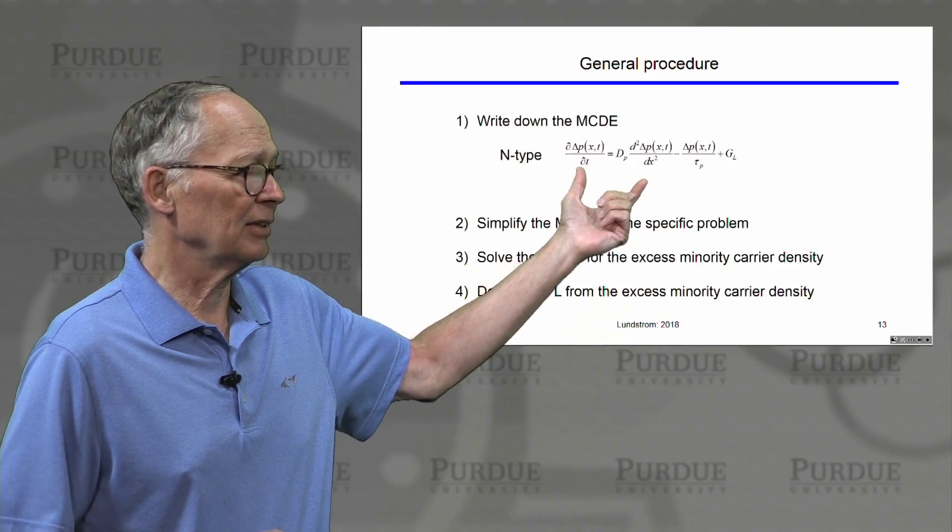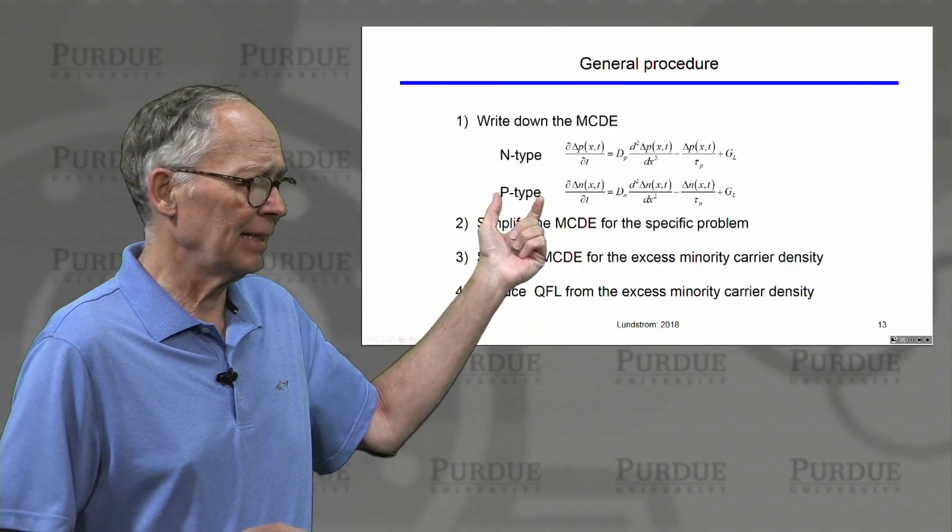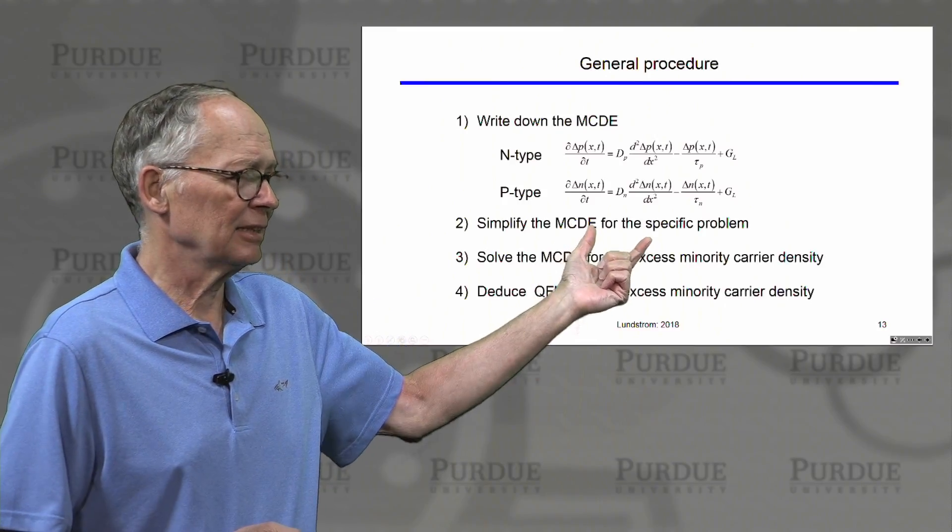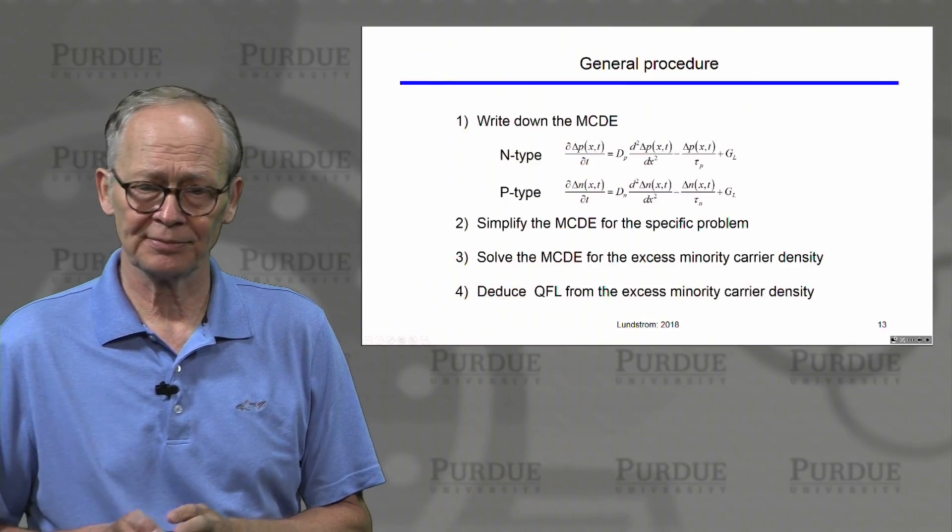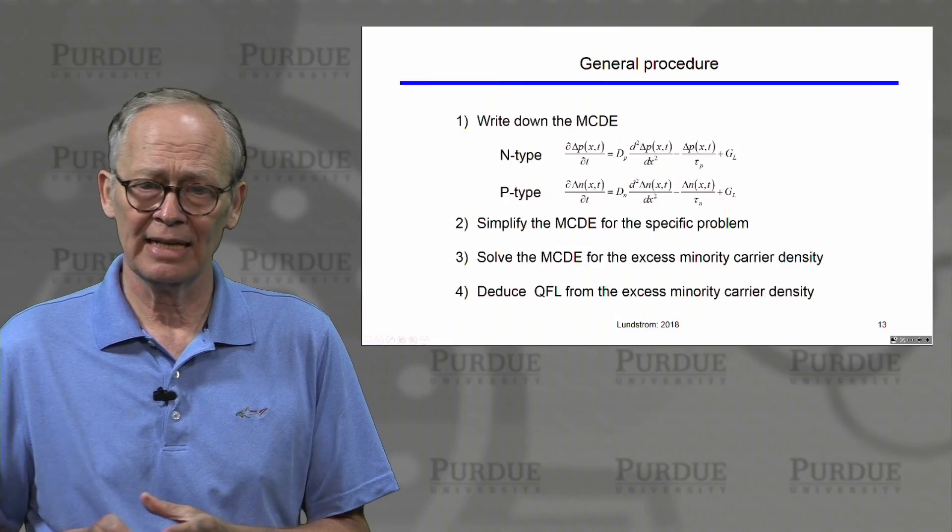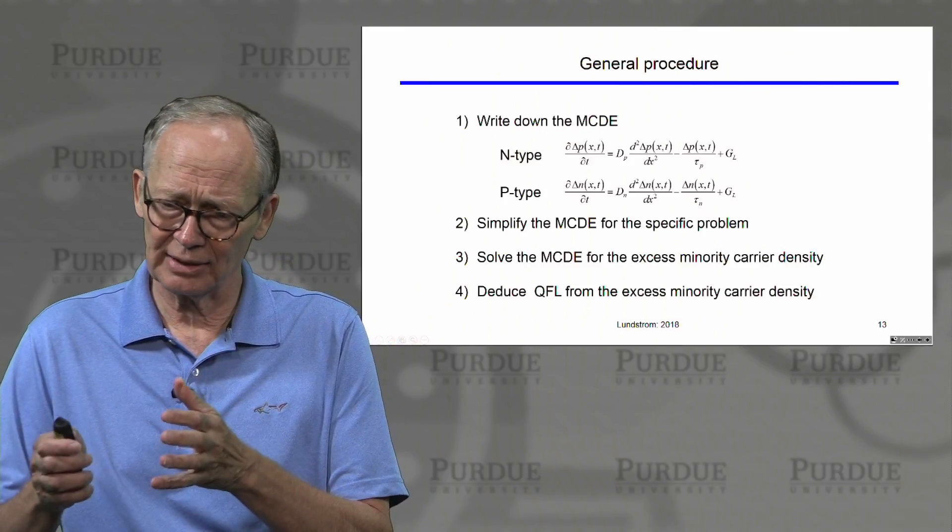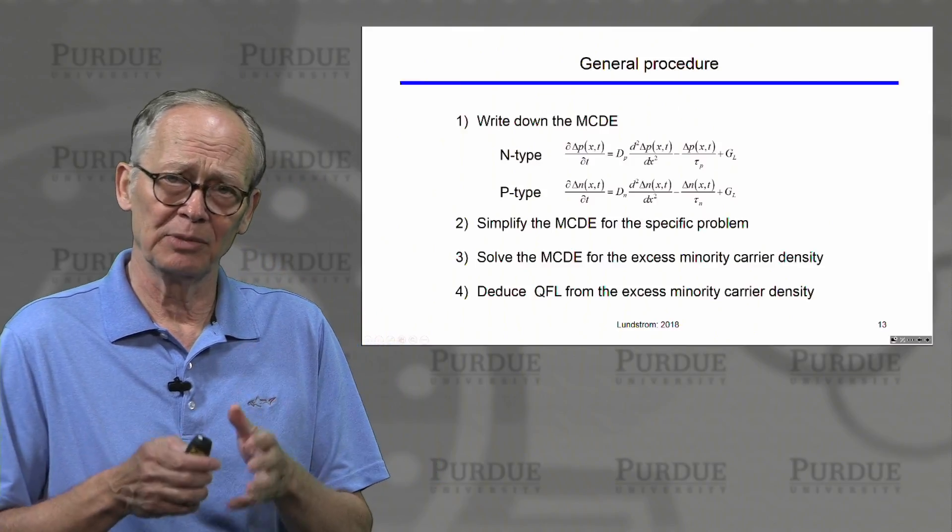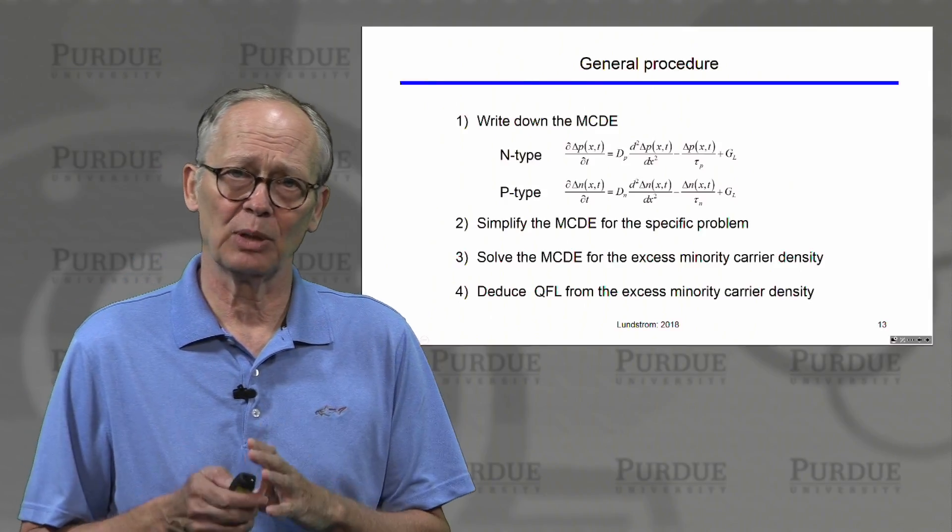The first step is to write down this equation and make sure that the simplifying assumptions are valid. In n-type semiconductor, we would be after the minority carrier hole concentration. In p-type semiconductor, we would be after the minority carrier electron concentration. Depending on the specifications of the specific problem, we may be able to simplify the equation. We can then solve that equation for the minority carrier density. Once we have the minority carrier density, we can deduce the minority carrier quasi Fermi potential.